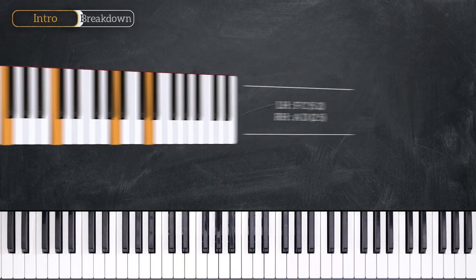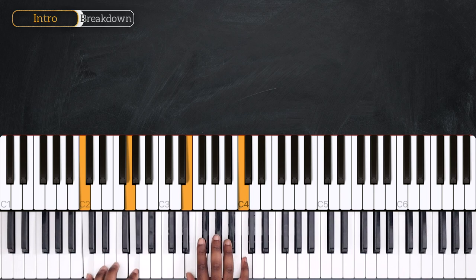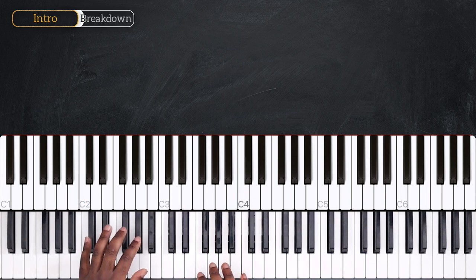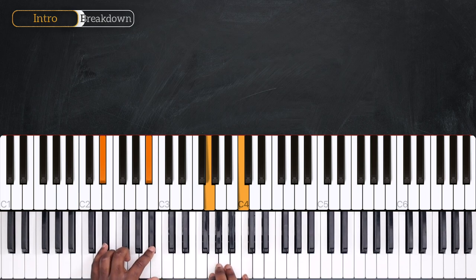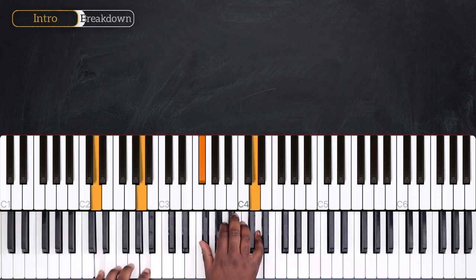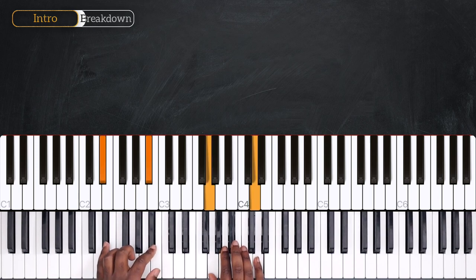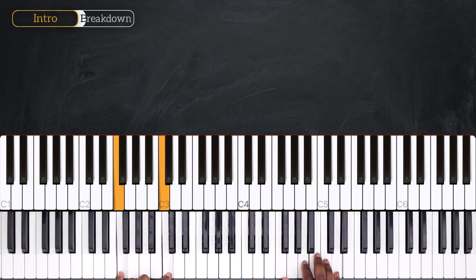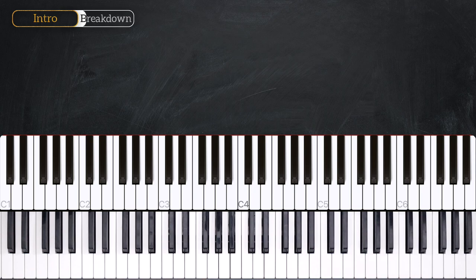So let's recap from the top. We have C, Db major 7, Eb 6, then D, Eb major 7, F6. Okay, we're starting with this.